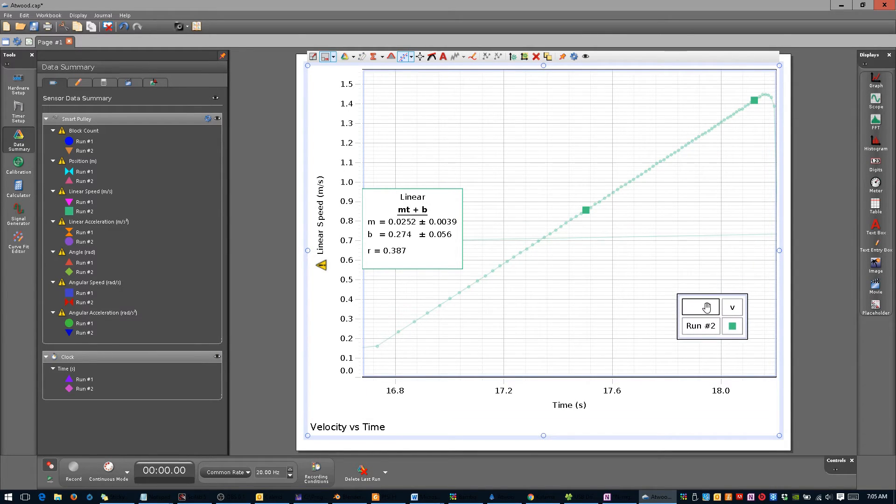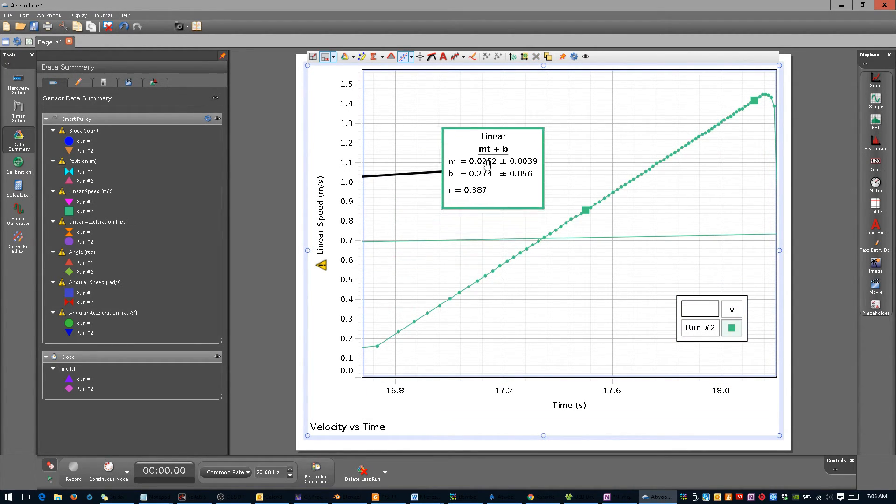You may need to move one or more of the boxes out of the way of the figure so that all of your data is visible. Click the button with the yellow highlighter and three blue dots on it. This will allow you to select only the portion of your data that you wish to analyze.